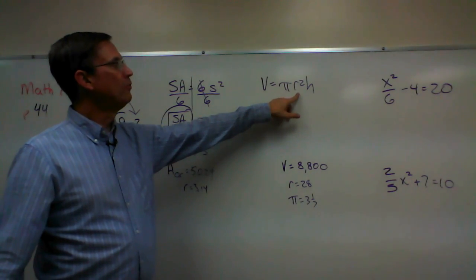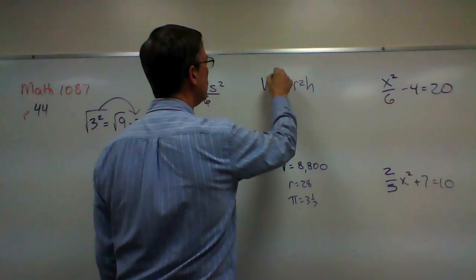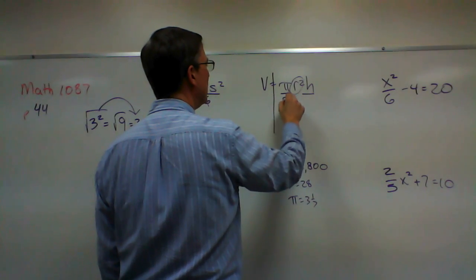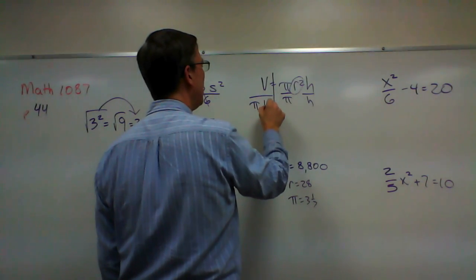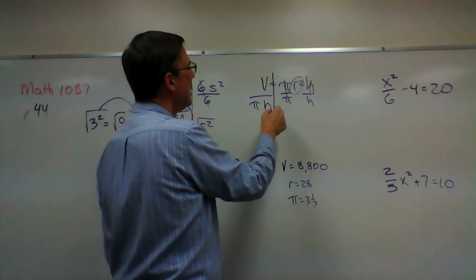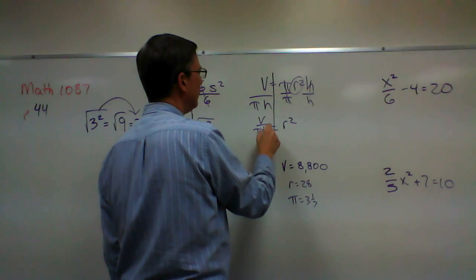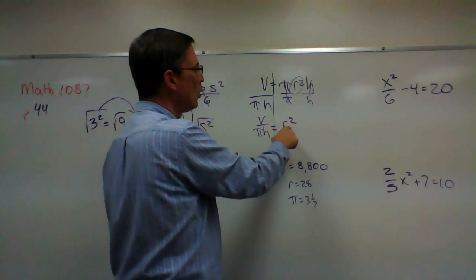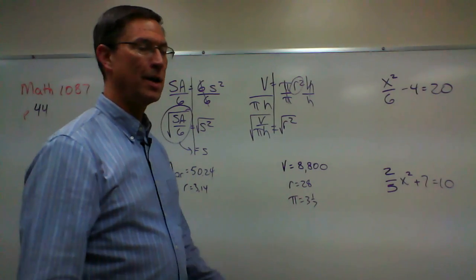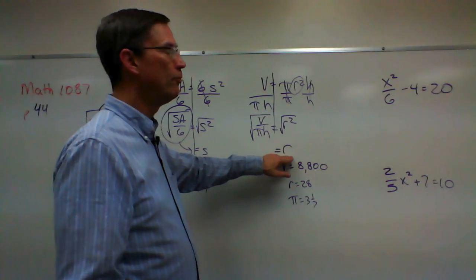Let's take this one. We're going to solve for R — this is a variable. Since I'm solving for R, I first have to get rid of pi and H. So I divide by pi and divide by H over here, too. We did this in a previous assignment. That leaves me with R squared. How do I undo the squared? I do the square root, and I have to do the same thing to the other side. And that will give me just plain R.